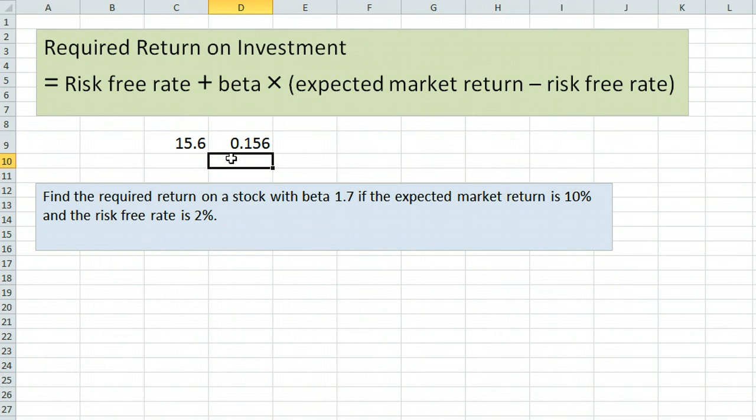Just note one final thing. Beta is not a percentage. It's just a plain value. So no matter how you do this problem, beta will always go in as 1.7.